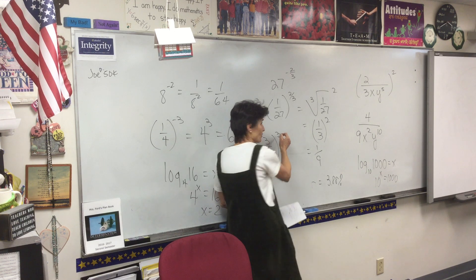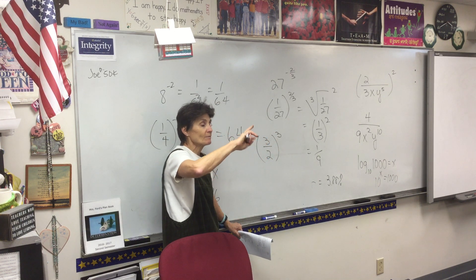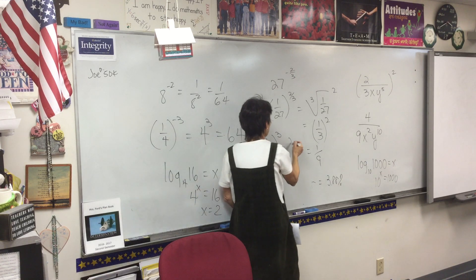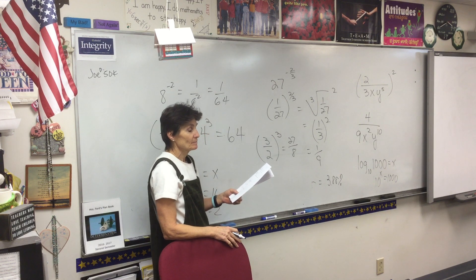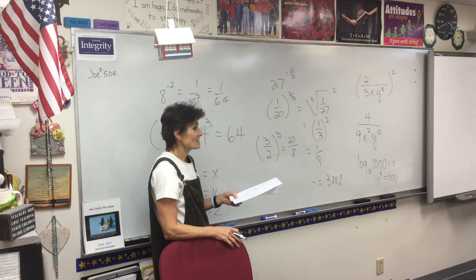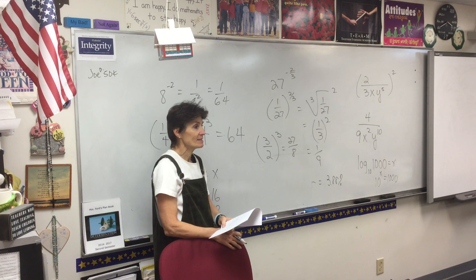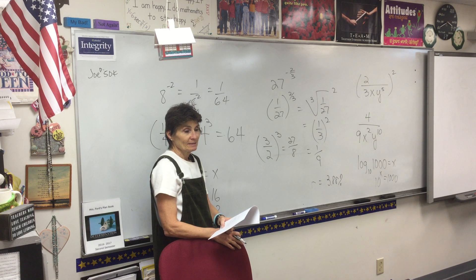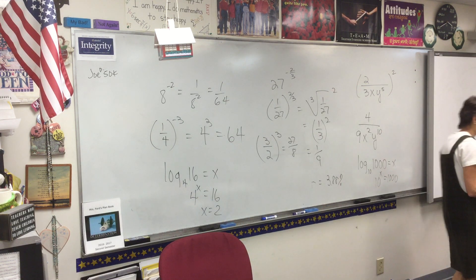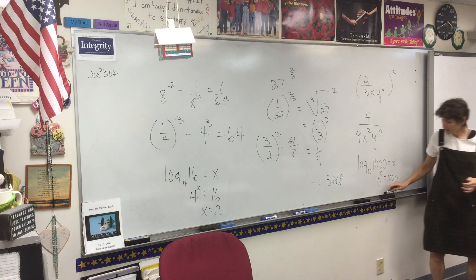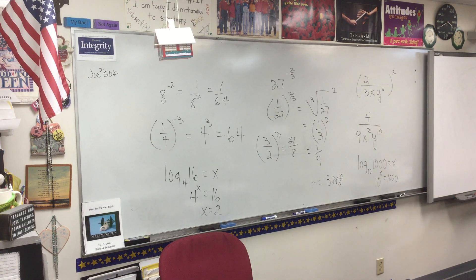The next one: 3 halves to the negative 3rd — you have to flip it, giving you 2 thirds to the 3rd, which is 8 over 27. The next one is 5, and the last one is 5 as well, because the base on LN is E. All right, have a great day — we'll pick up here tomorrow after we take our quiz.